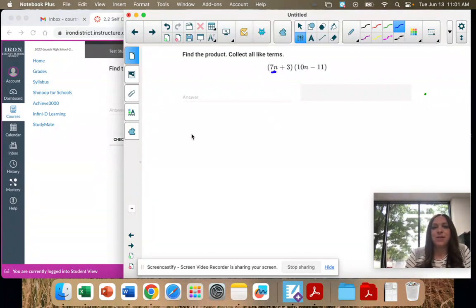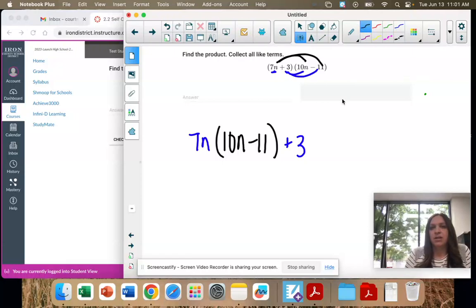First term in the first binomial goes to both terms in the second. Then the second term in the first binomial goes to both terms in the second.